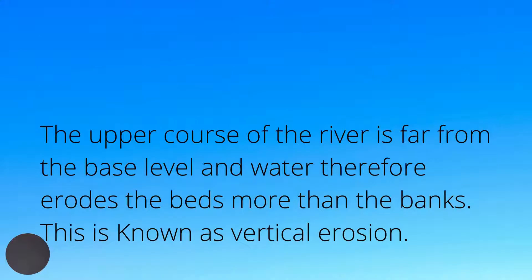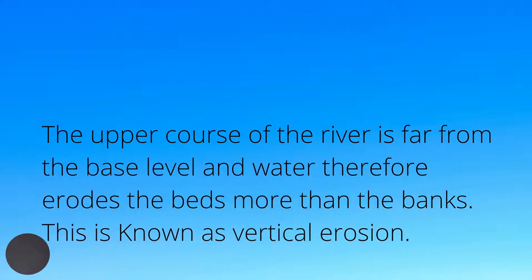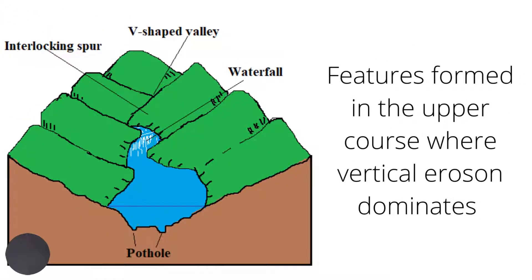The upper course of the river is far from the base level, and water therefore erodes the beds more than the banks. This is known as vertical erosion. Some of the features that are formed in the upper course include V-shaped valleys, interlocking spurs, waterfalls, potholes, and rapids. Most of these features are the result of vertical erosion.